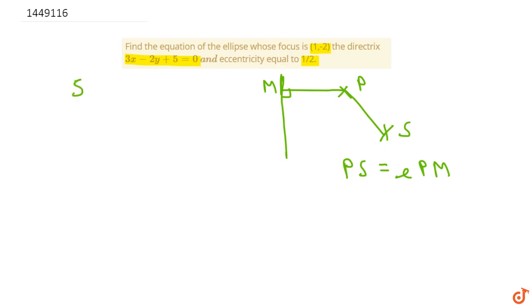Now here S is our focus, and PM is the perpendicular distance from the directrix. So S is (1, -2), the focus is our point. And the directrix equation is 3x minus 2y plus 5 is equal to 0. And our eccentricity e is 1/2, because whenever we have an ellipse, e will be less than 1.